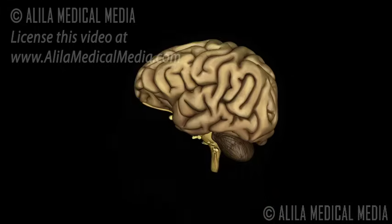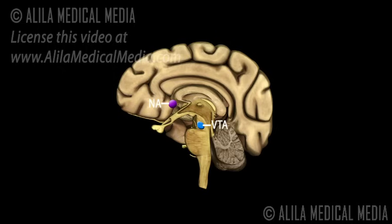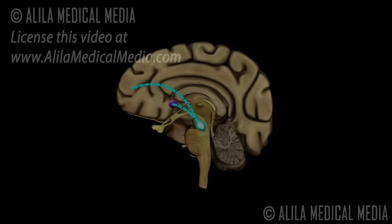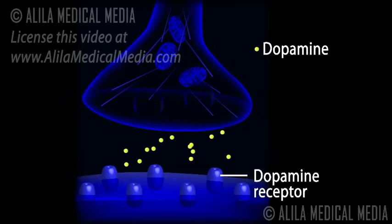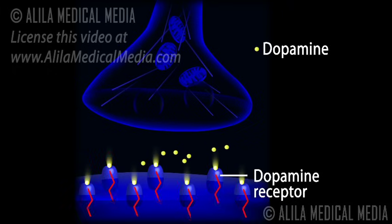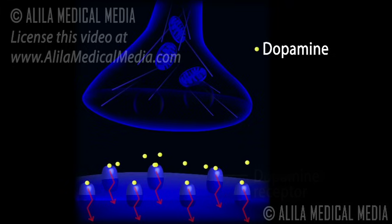The major reward pathways involve transmission of the neurotransmitter dopamine from the ventral tegmental area, the VTA, of the midbrain to the limbic system and the frontal cortex. Engaging in enjoyable activities generates action potentials in dopamine-producing neurons of the VTA. This causes dopamine release from the neurons into the synaptic space. Dopamine then binds to and stimulates dopamine receptors on the receiving neuron. This stimulation by dopamine is believed to produce the pleasurable feelings or rewarding effects.